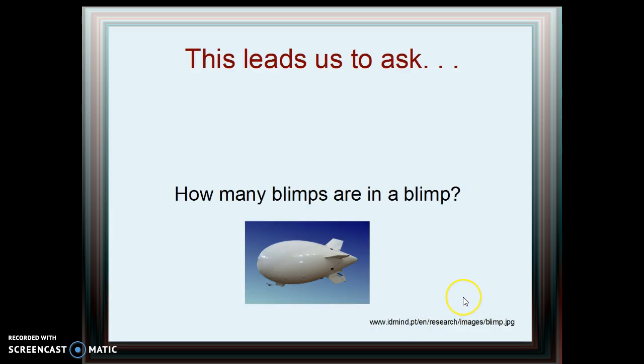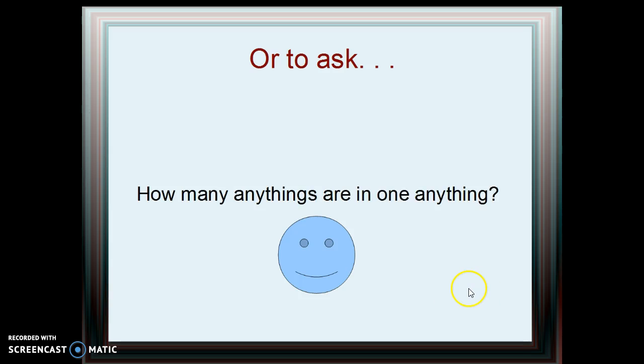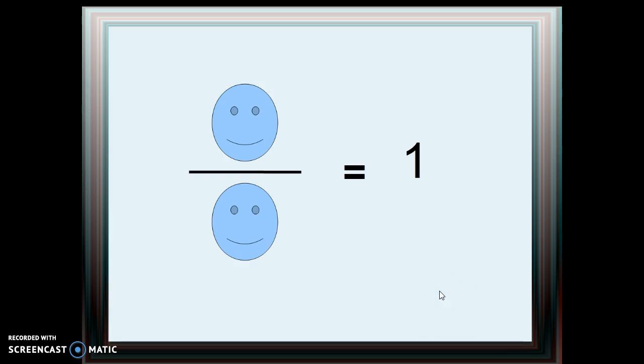This leads us to ask, how many blimps are in a blimp? The answer is clear. How many puppies are in a puppy? That answer is pretty clear too. How many anythings are in one anything? The answer is: anything divided by itself is 1.